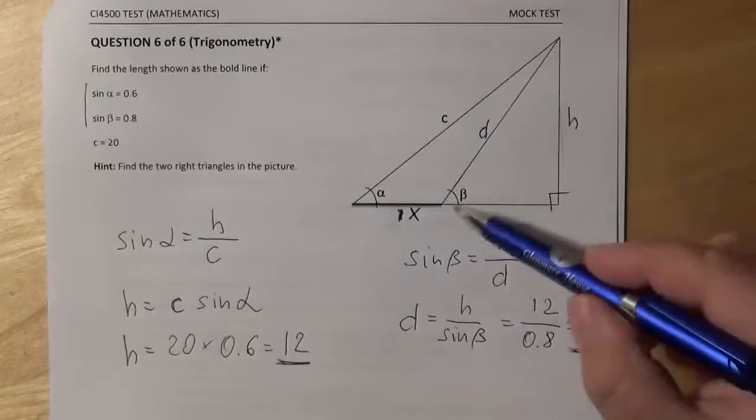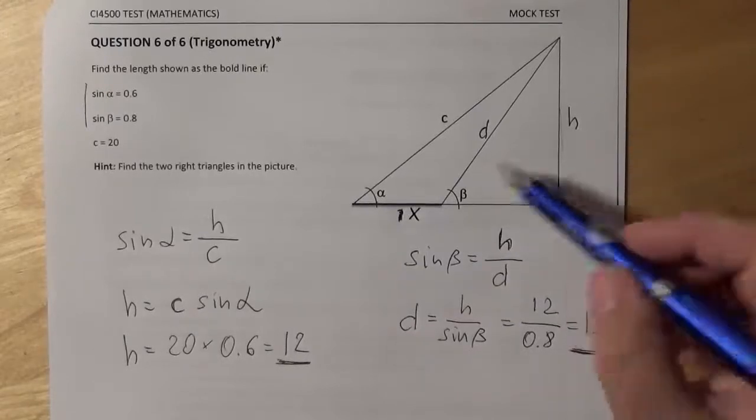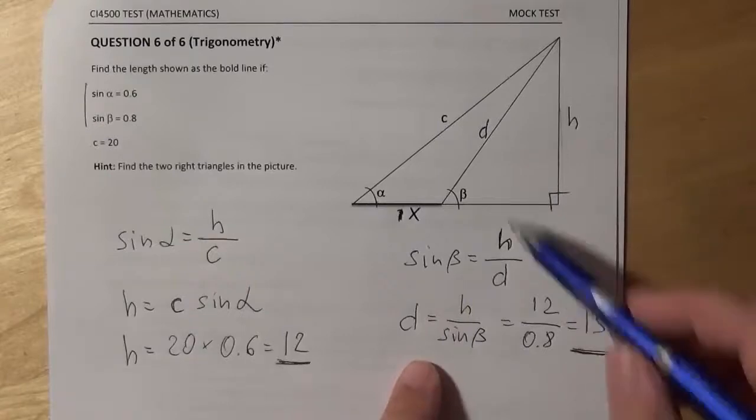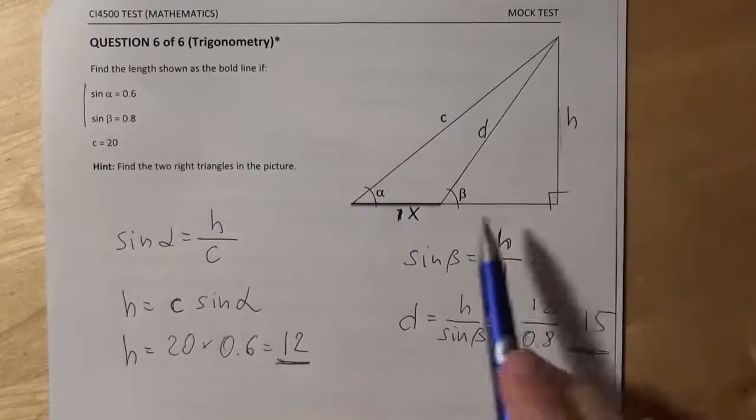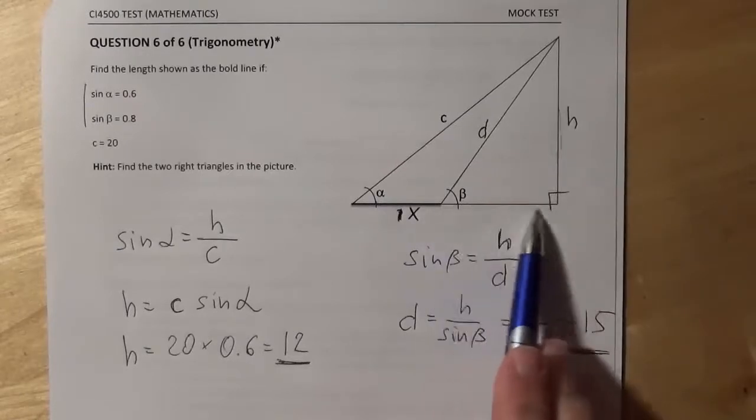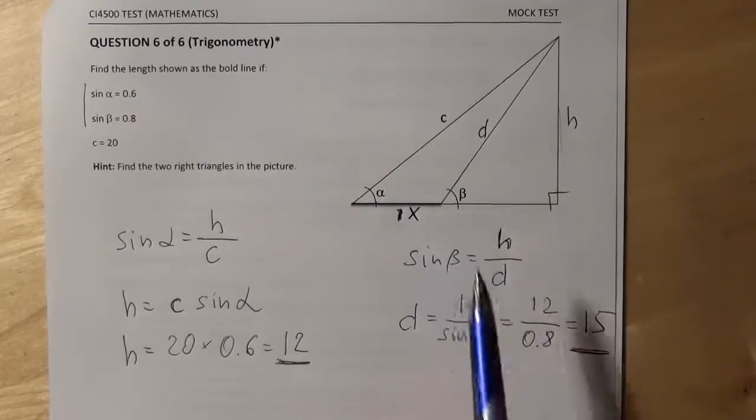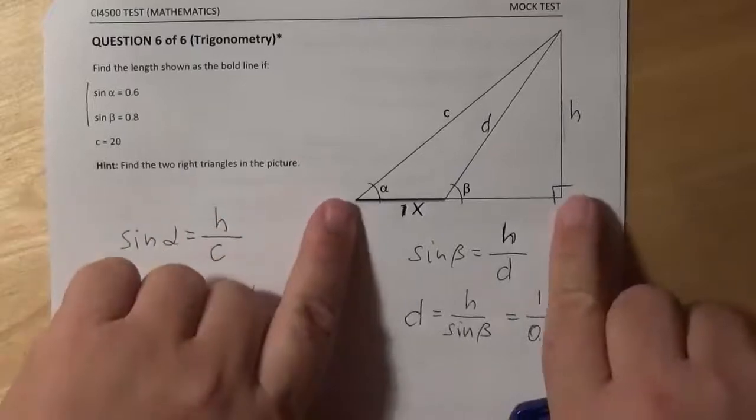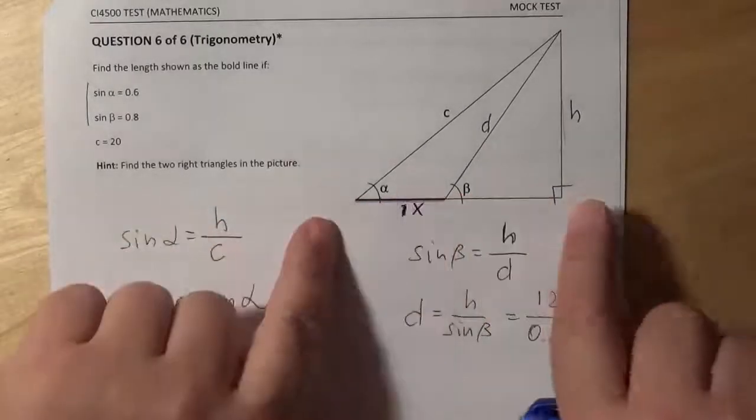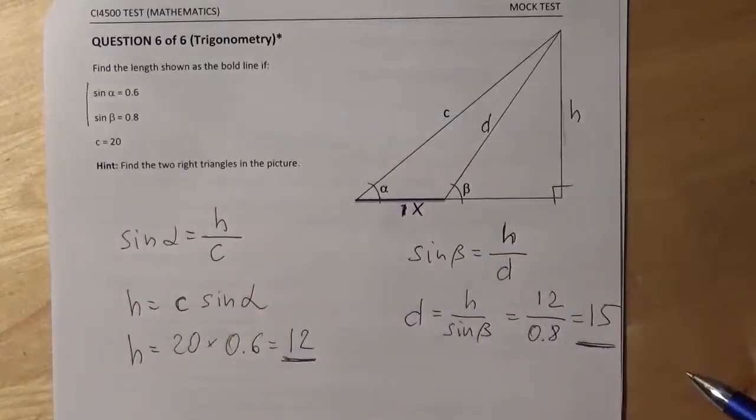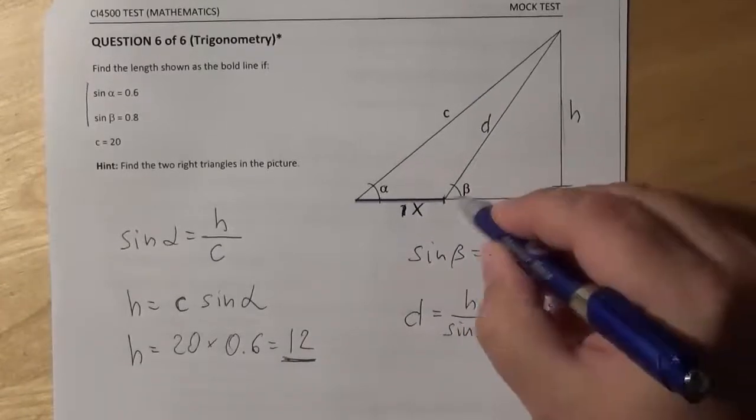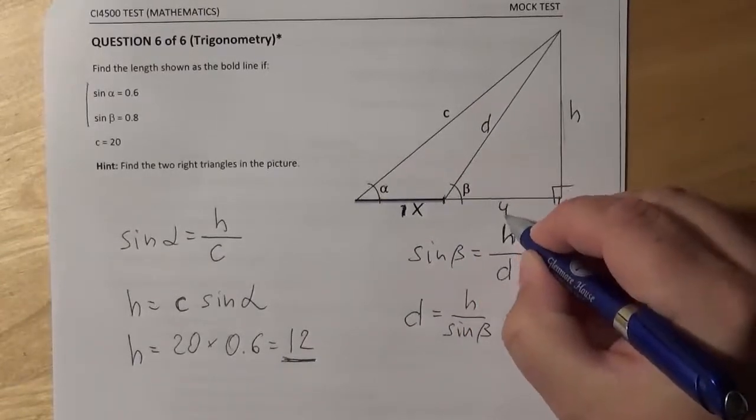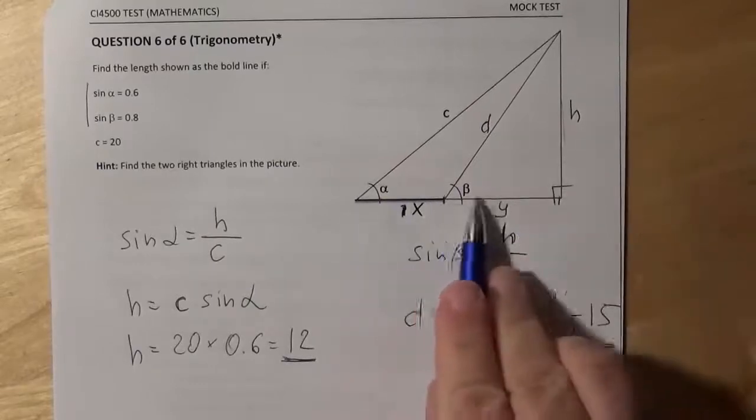Looking at the smaller triangle, we know now the value of D, so that's it, and the value of H, and we can easily find the length of this section here. Knowing the entire base, this and this, we can very easily find X. To do that, I will need to call this section here Y. Okay, so this is X, this is Y, together they make X plus Y.